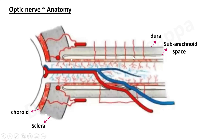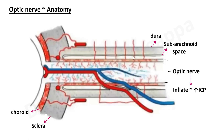At the proximal part of the optic nerve, as it originates from the optic disc, it is in extremely close proximity with the subarachnoid space and the dura. Any changes in the intracranial pressure are reflected with the swelling of the optic nerve in this proximal part. The optic nerve tends to inflate or swell up with an increase in intracranial pressure — that is what we ascertain with optic nerve sheath diameter.